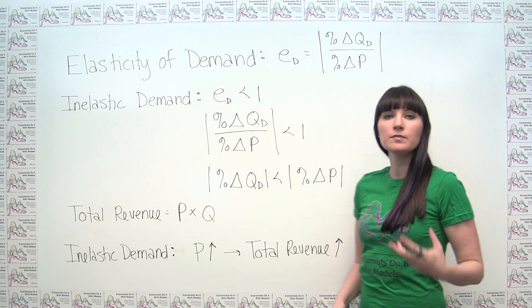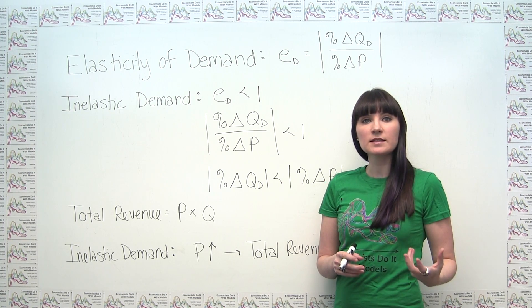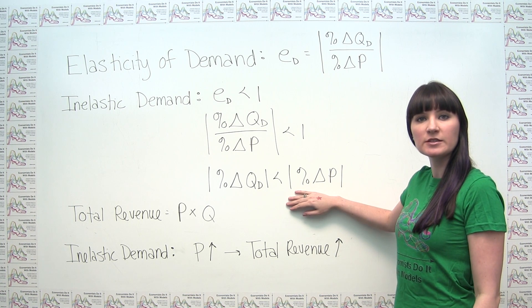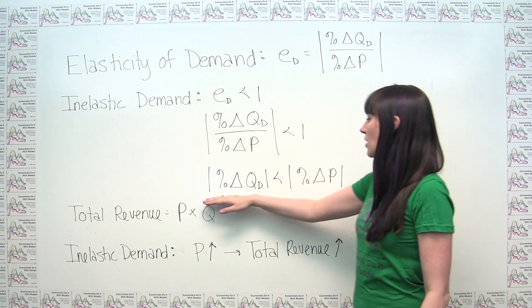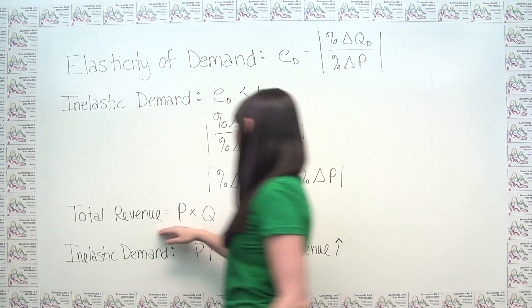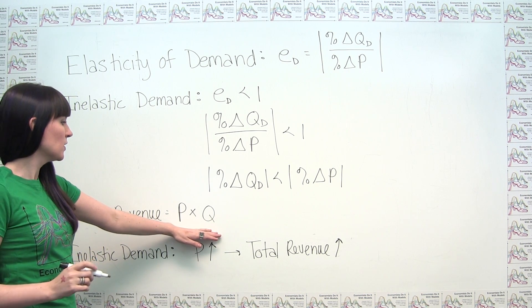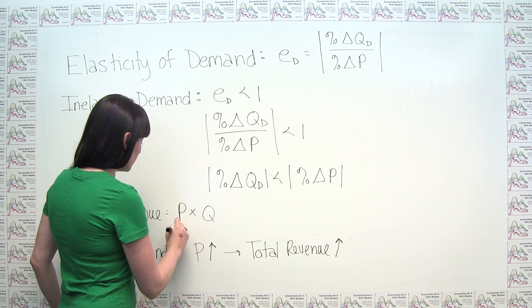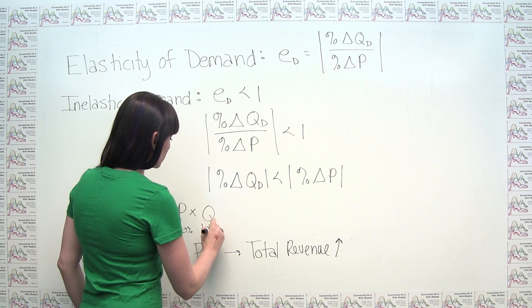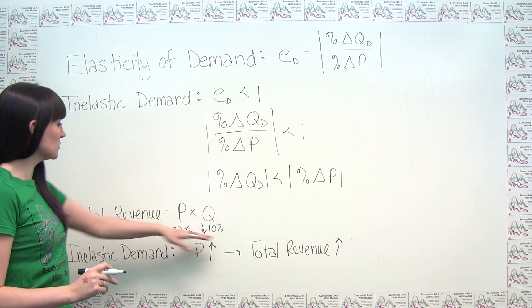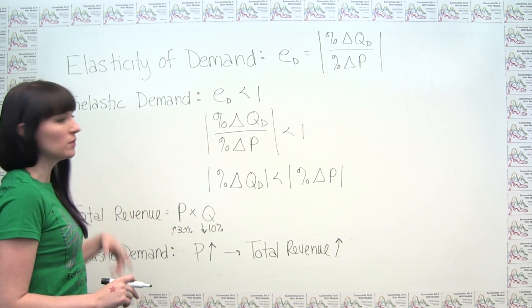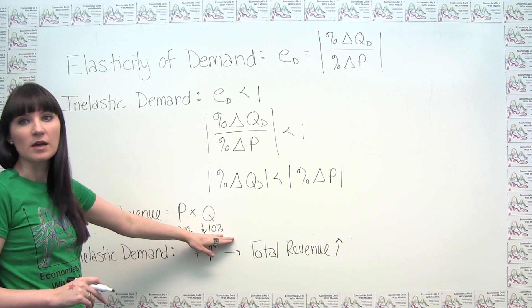So for example, our company would be facing inelastic demand if, for example, in response to a 30% change in price, the company saw only a 10% reduction in quantity demanded. So we can think here how that impacts total revenue. If the price were to go up by 30% and the quantity demanded were to go down by only 10%, that we would see larger overall revenue because the increased price would trump the fact that they're not selling as much as they were before.